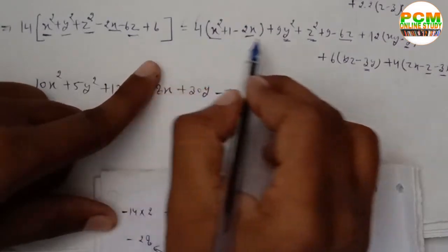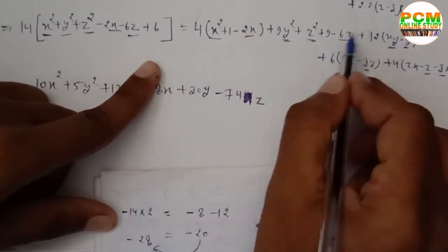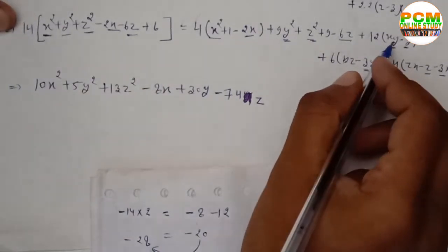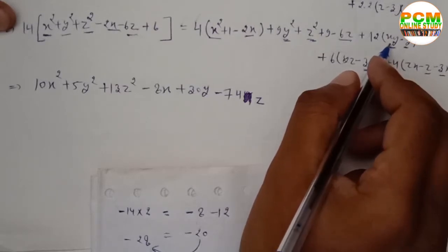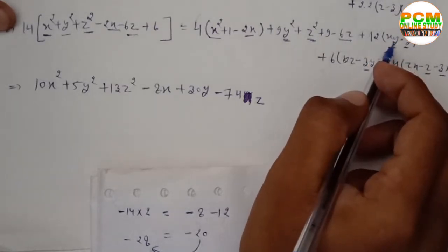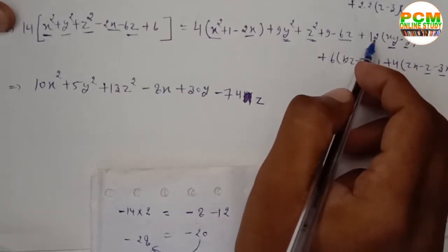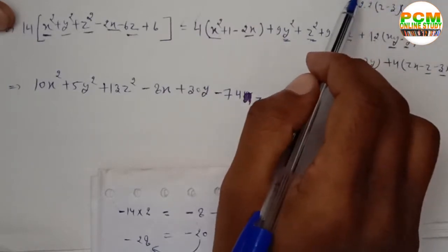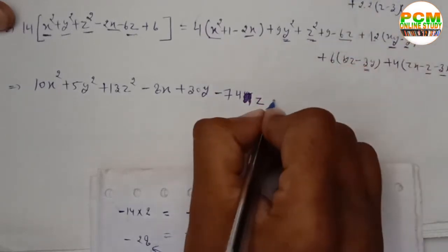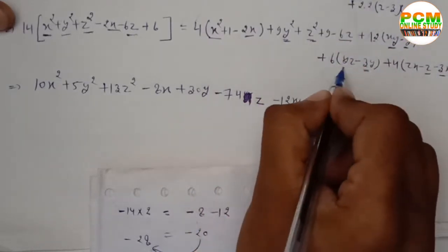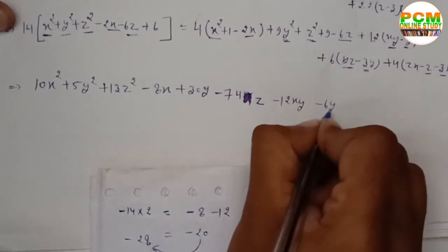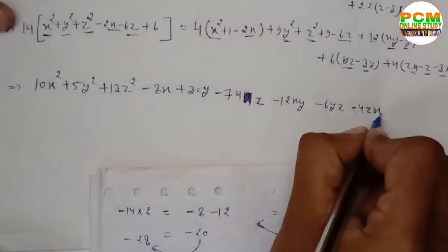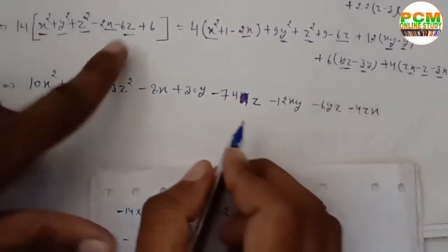Collecting the xy terms: the coefficient is −12xy, sent to the other side gives −12xy. The yz terms give −6yz, and the zx terms give −4zx.